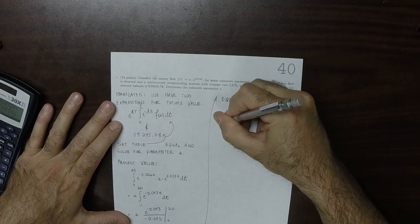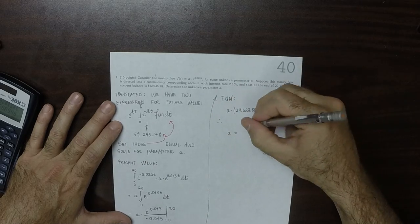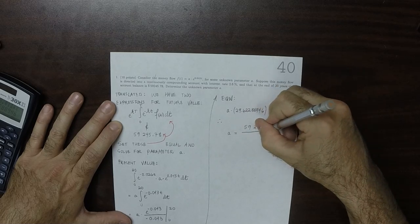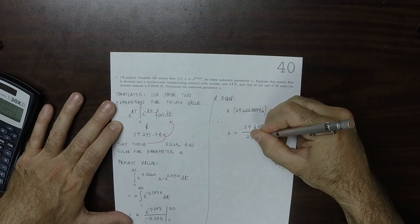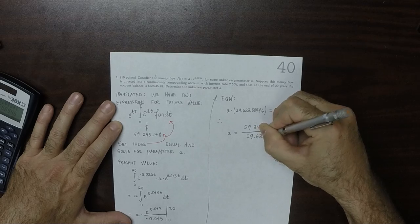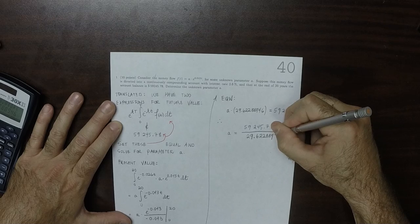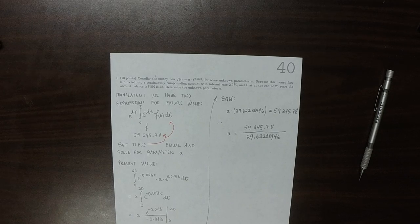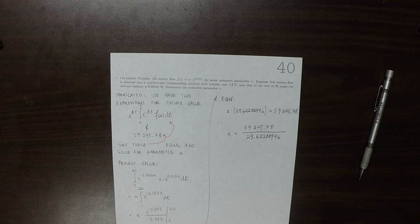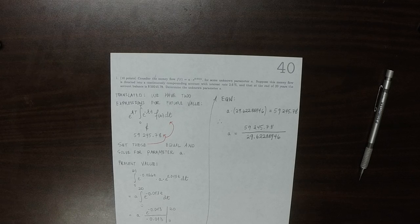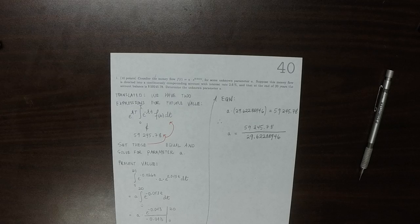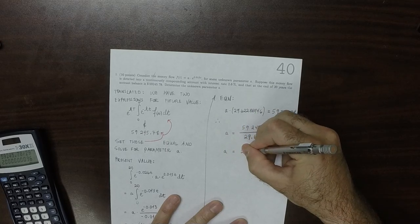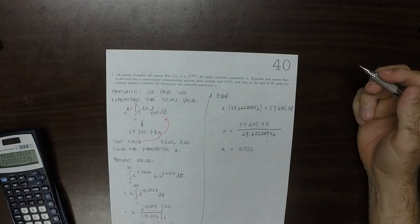As a result, A is 59,245.78 divided by that number, 29.62288946, which is 2,000. Okay, that's the answer.